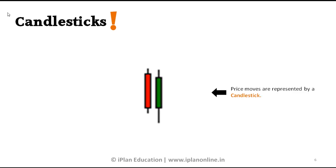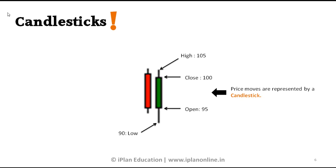Each candle represents all four prices of the time frame. You can see here the high price was at 105, the close was at 100, the open was at 95, and the low was 90. So the first traded price was 95, it went low to 90, went high to 105, and then price came down a little and closed at 100.